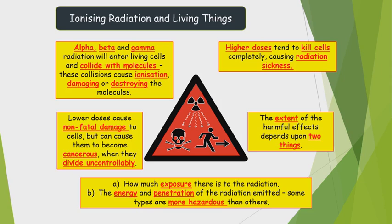Higher doses tend to kill cells completely, causing radiation sickness. The extent of harm depends on two things: how much exposure there is to the radiation, and the energy and penetration of the radiation emitted. Some types of radiation are more hazardous than others.